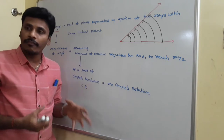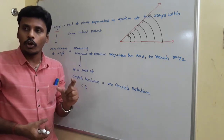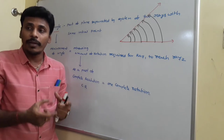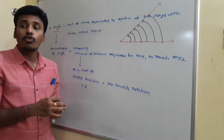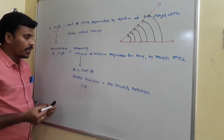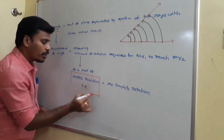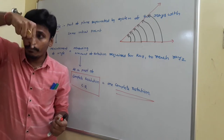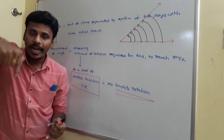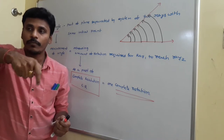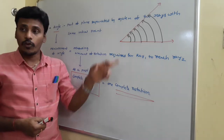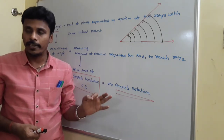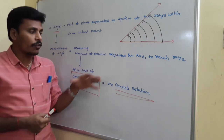To measure anything you need one standard measurement. Here, to measure the amount of rotation, that standard measurement is the complete revolution. The complete revolution is one complete rotation — the amount of rotation required for one ray to start and reach its same position again. As a part of that complete revolution, we measure the amount of rotation, and that amount as a part of the complete revolution is termed as the measurement of the angle. This is all that we discussed in the previous class.